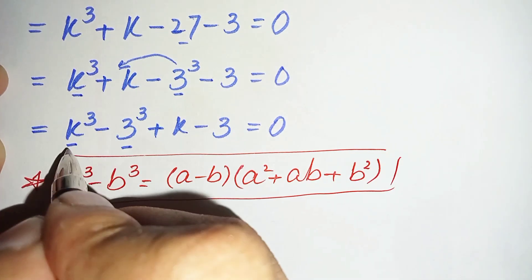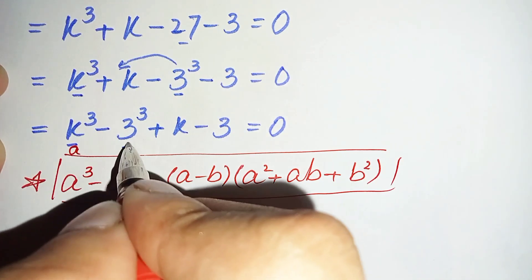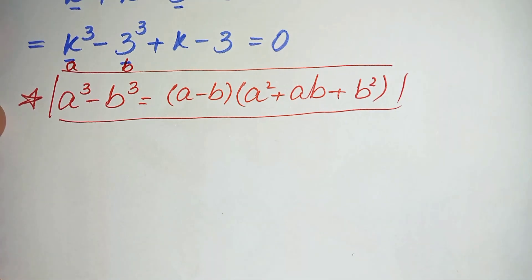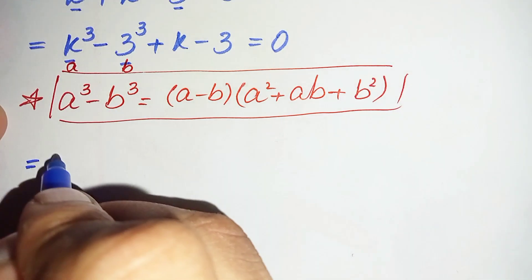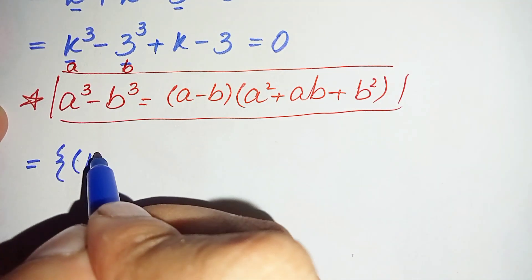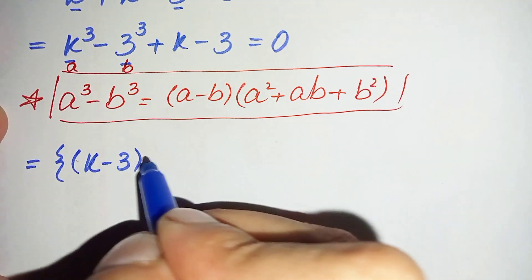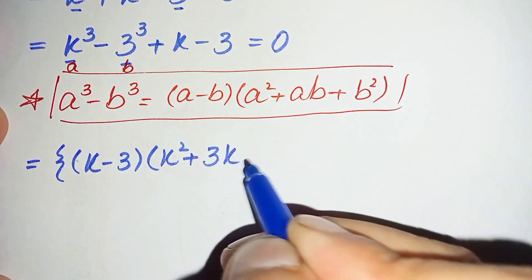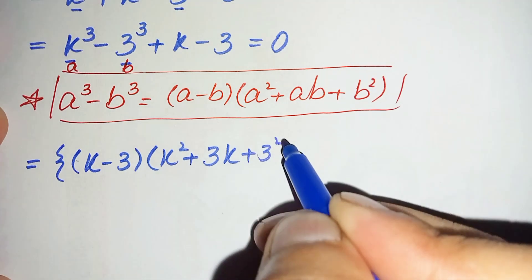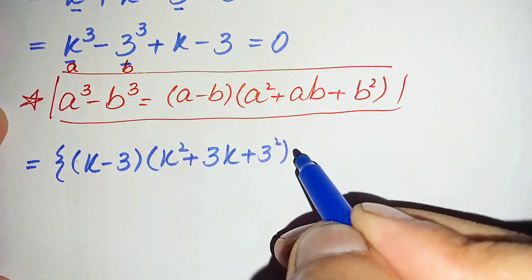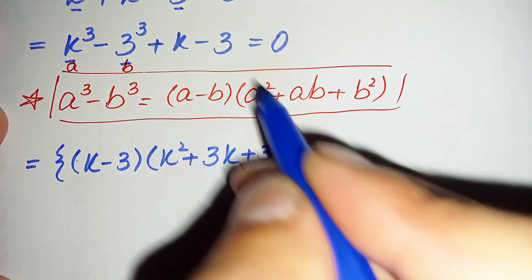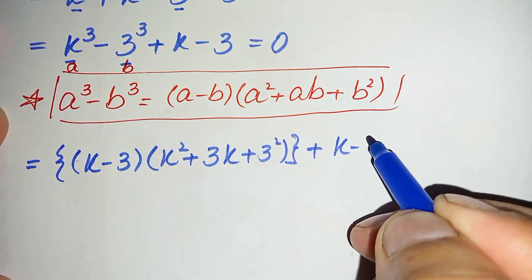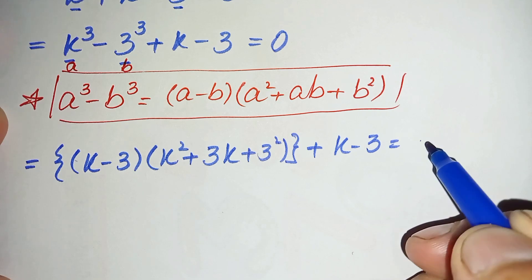Here, k is a and 3 is b. Applying the cubic identity, the expression becomes k minus 3, times k square plus 3k plus 3 square, plus k minus 3, is equal to zero.